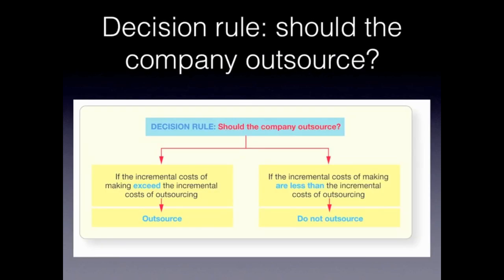Let's look at the decision rules for whether we should outsource or not. If the incremental cost of making a product exceeds the incremental cost of outsourcing, then we should outsource — it costs more for us to make it than to buy it somewhere else. If the incremental cost of making the product is less than the incremental cost of outsourcing, then we do not outsource.